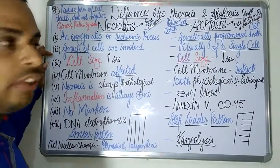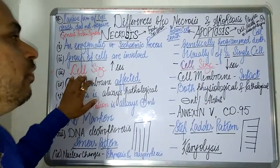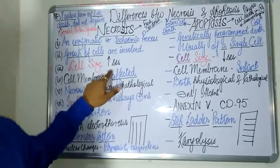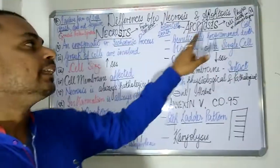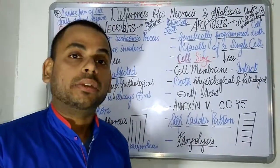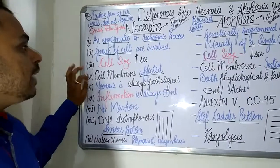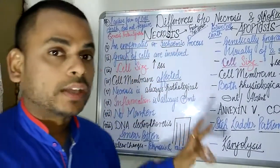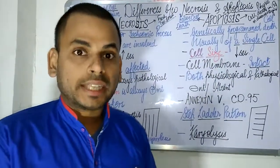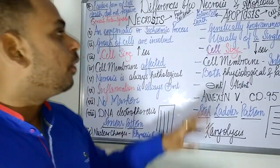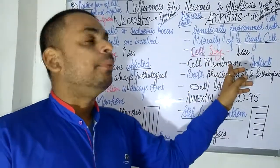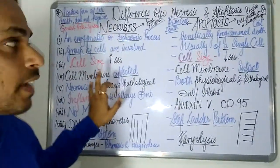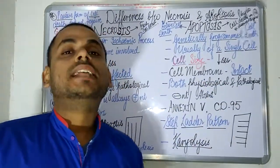At the cellular level, in the process of necrosis, the cell size increases — a striking and distinguishing feature. Whereas in the process of apoptosis, the cell size is going to decrease. Also, in necrosis, injury to the cell membrane occurs, which leads to the release of hydrolytic enzymes from the lysosomes and cellular death. Whereas in apoptosis, the cell membrane is intact.